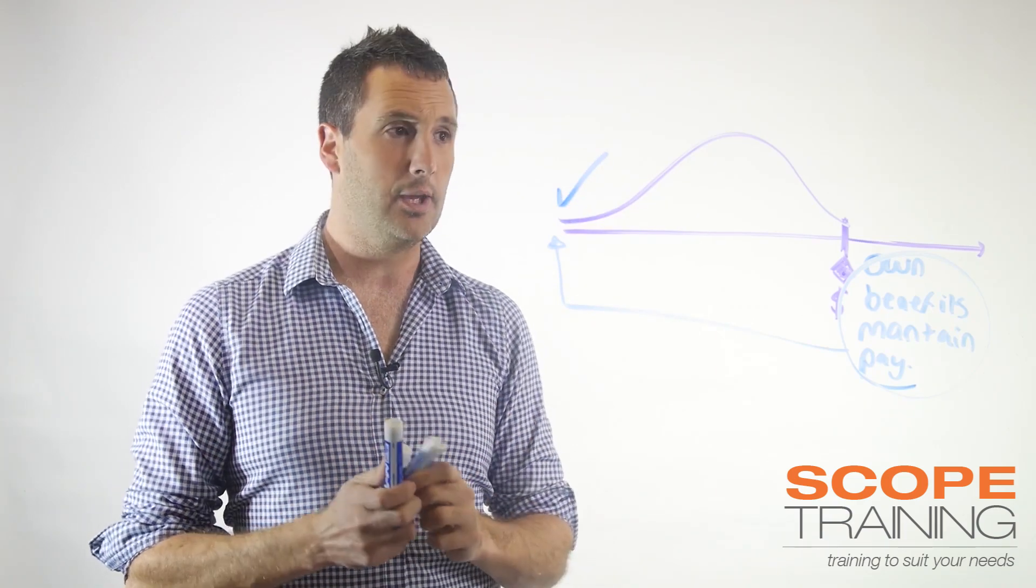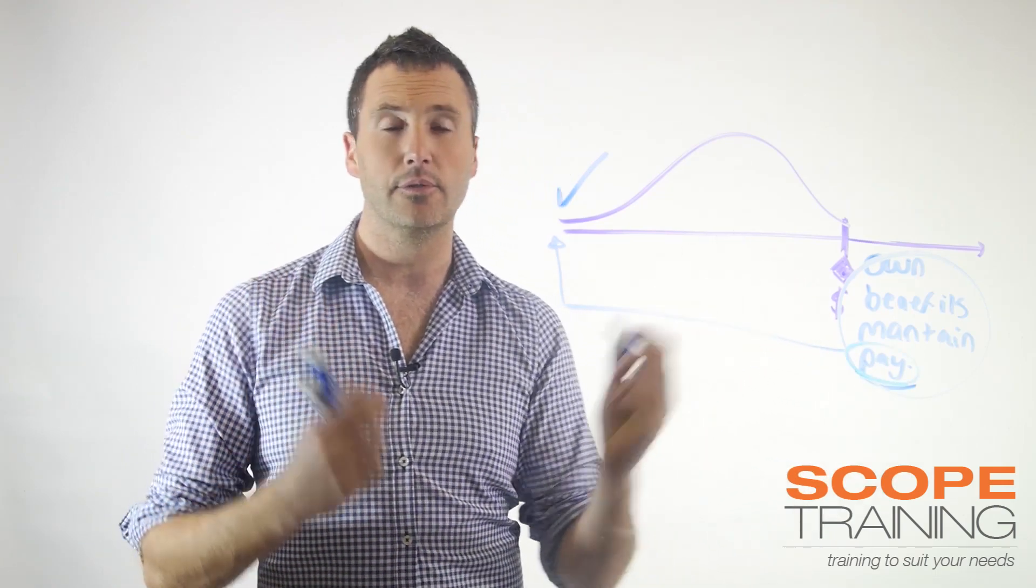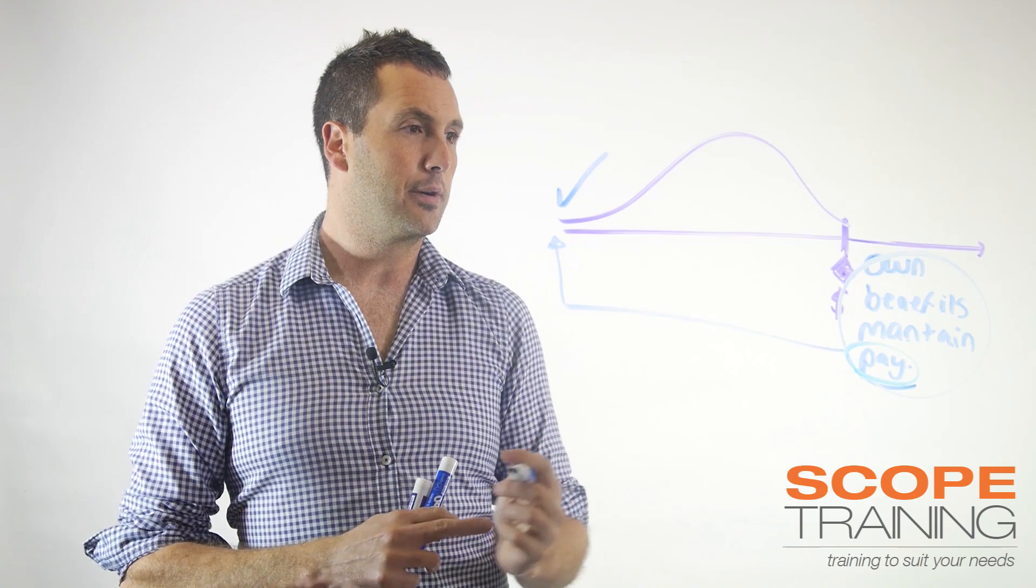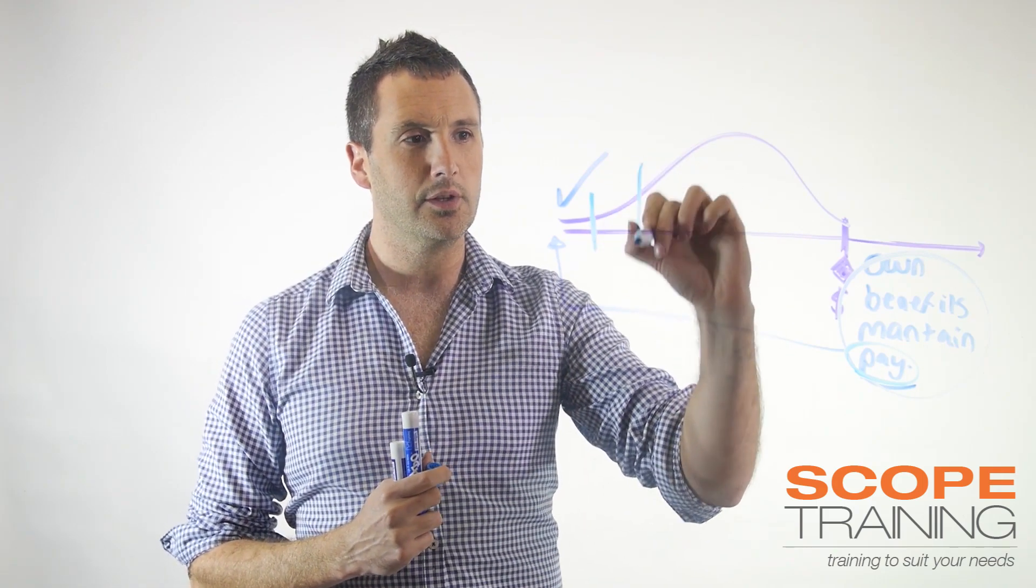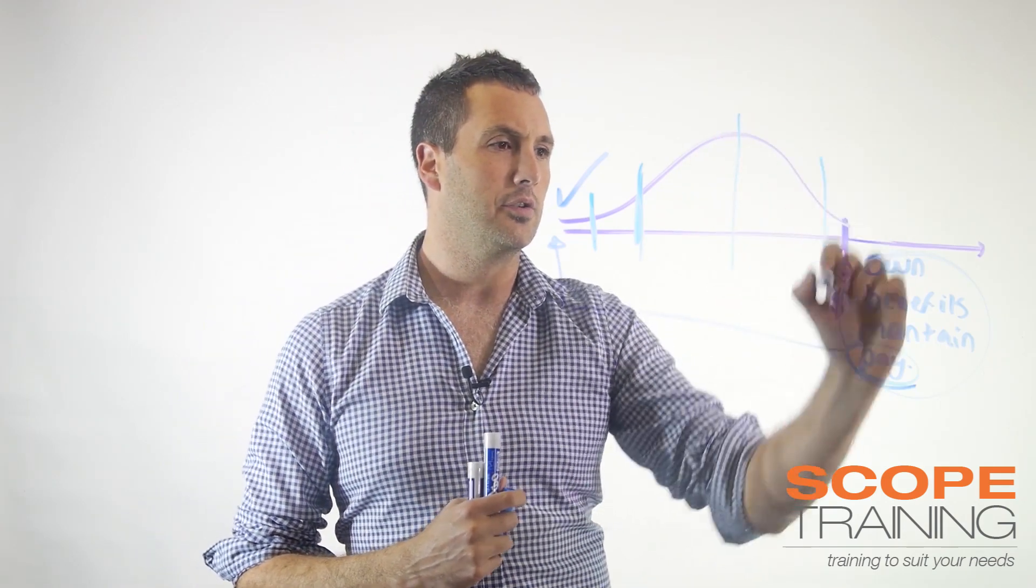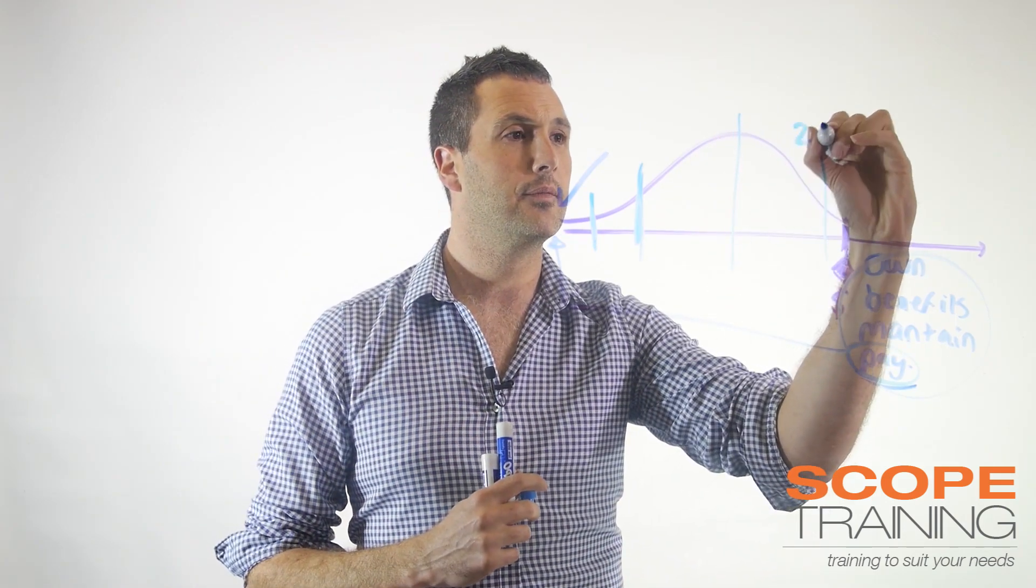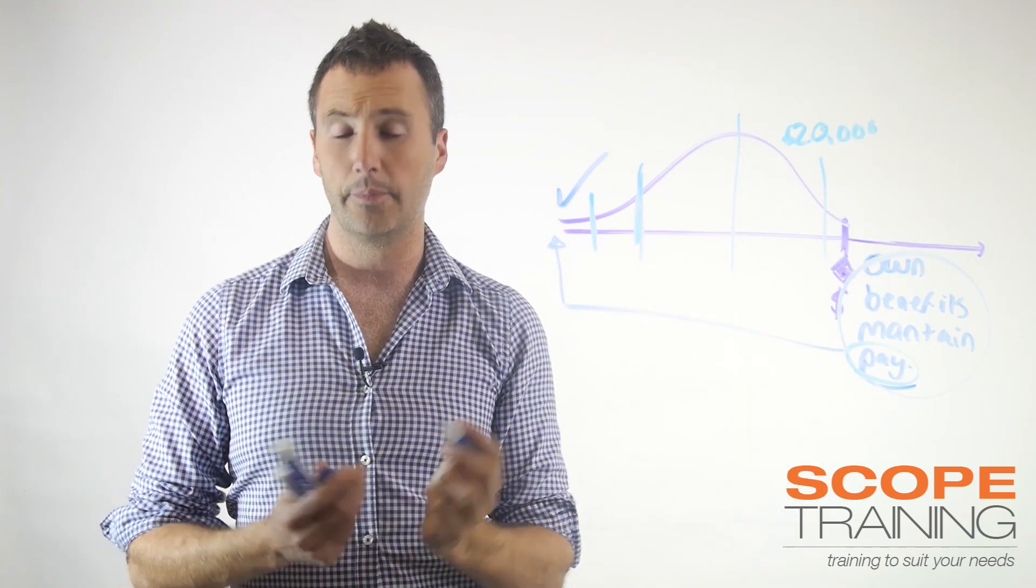A very quick example for life cycle costing. Let's say our project was to buy a car. So we do some research, we go in the market, we do some negotiations, we do some stuff and we end up with a car. And the total cost of that project has been $20,000.